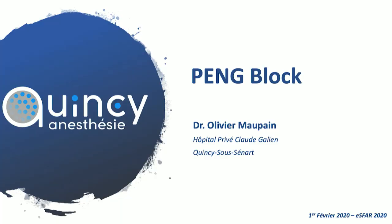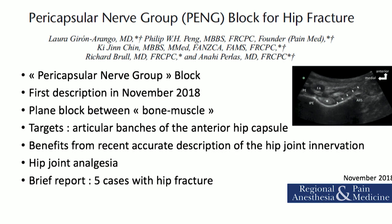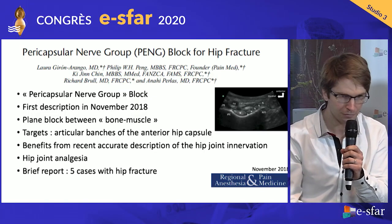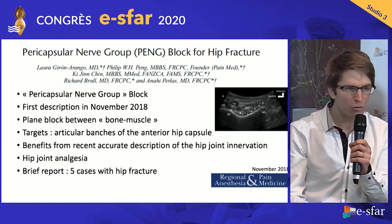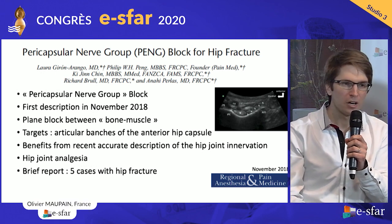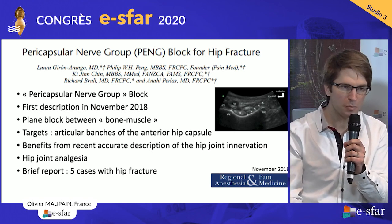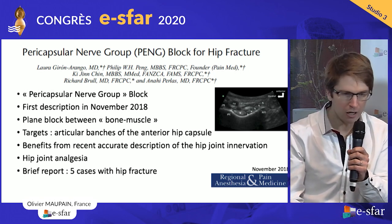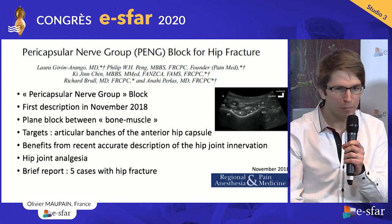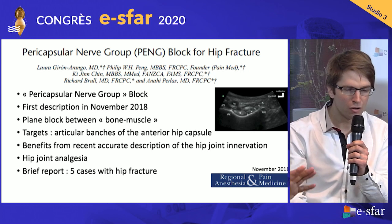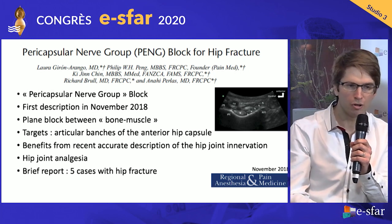Let's talk about PENG block. PENG block stands for pericapsular nerve group block. It was first described approximately one year ago by a Canadian team. This block is a plane block, and it benefits from the recent accurate description of the anterior hip joint innervation. This block is a plane block between a bone wall and a muscle wall, and it targets articular branches of the anterior hip capsule. In this princeps paper that describes the technique, they use PENG block for five cases of hip fracture in order to manage hip analgesia.